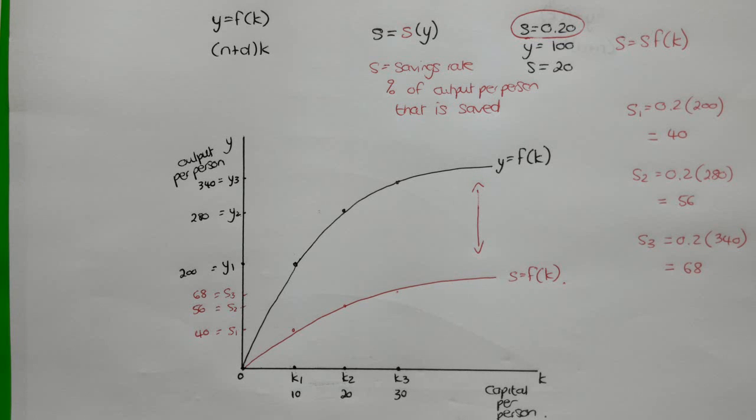So that's our savings function. What we have now got is a production function, an investment requirement, and a savings function. I'm going to do another video separately which then links all of these things together to make the neoclassical growth theory.